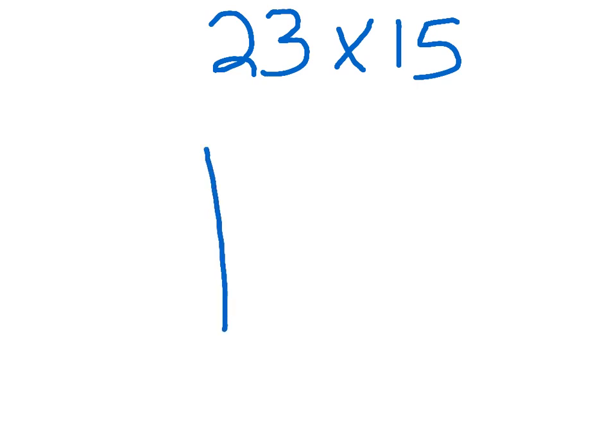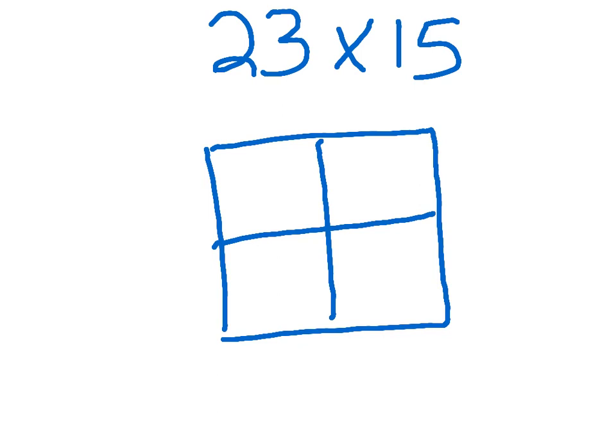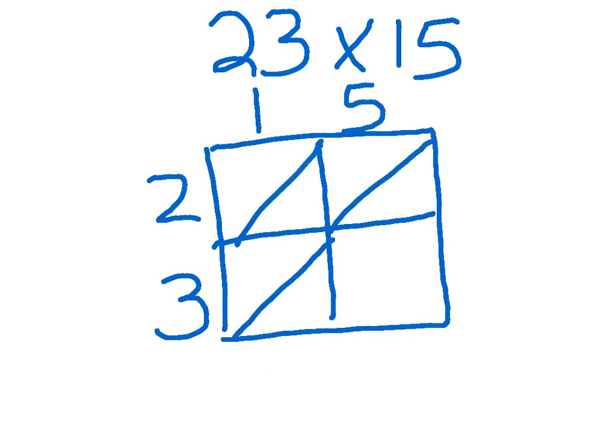You would draw your partial products box just like before, but this time when you put your numbers to the outside, you will not show them in place value. For example, you'll just put a 2 instead of a 20. Then in each box you will put a diagonal line. The top of the diagonal line represents the tens, the bottom part represents the ones.